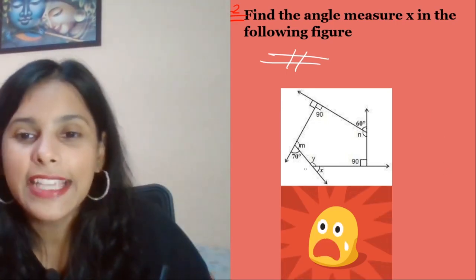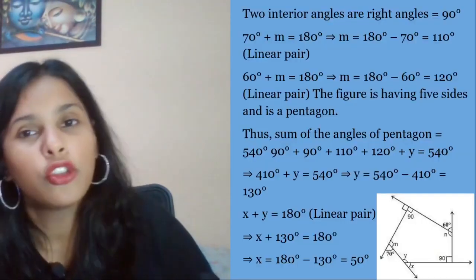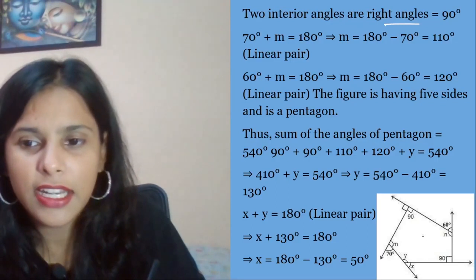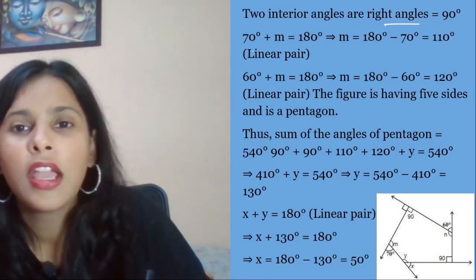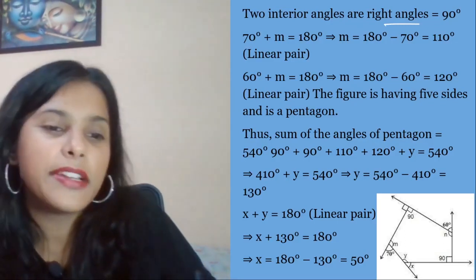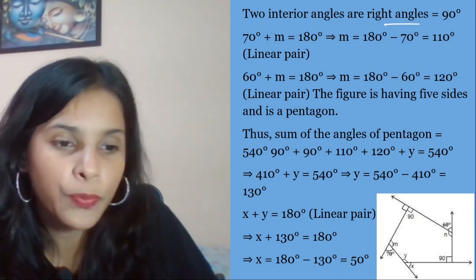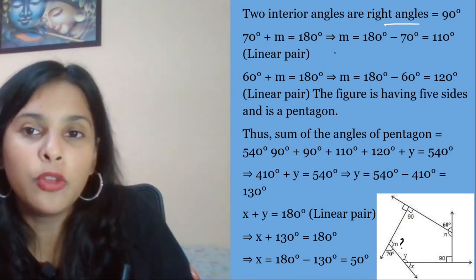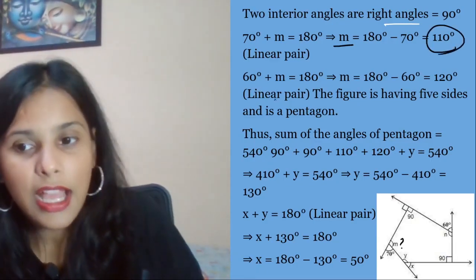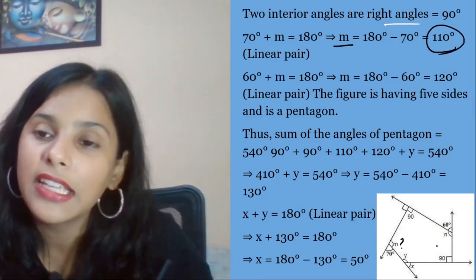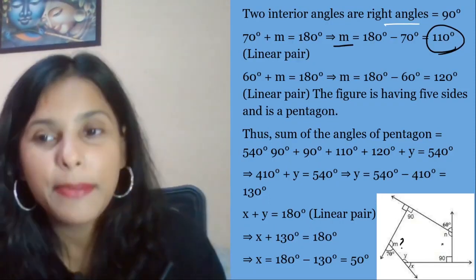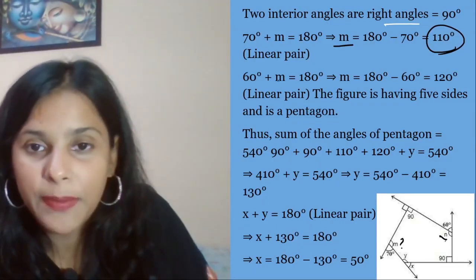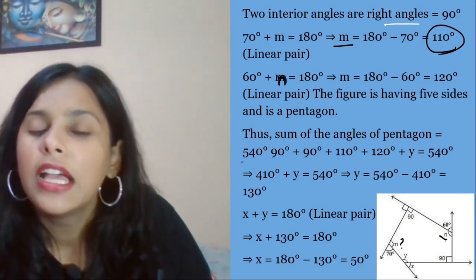Find x's value in this figure. We know that two interior angles are right angles. We can see these two right angles. Then we know we can find m's value using the linear pair.